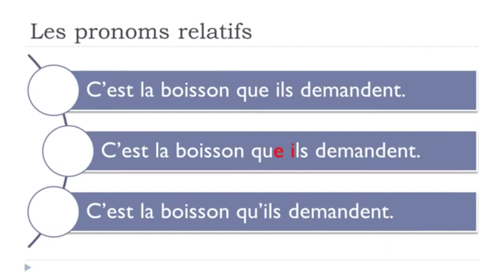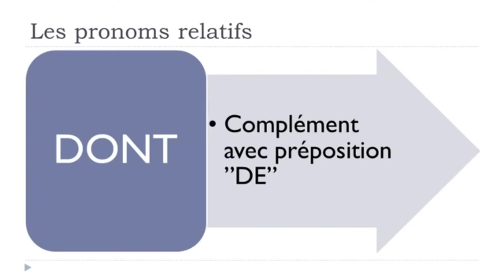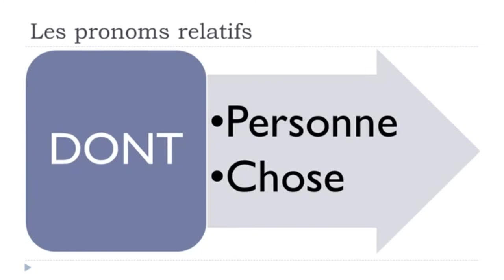Now let's look at 'dont'. The important thing with 'dont' is that you use it instead of a complement introduced by the preposition 'de'. It should be a complement completing the sentence (coming after the verb), and it must be introduced by 'de'. We'll start with a person, then a thing.